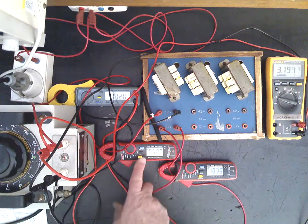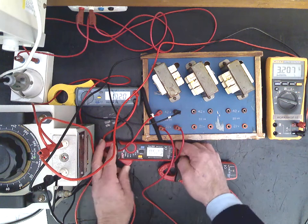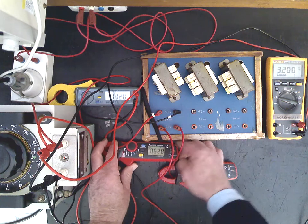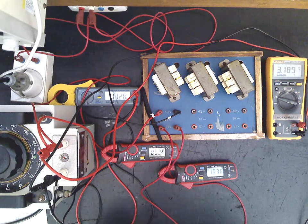The current in the primary is 0.5 of an amp. You can see that. It's a bit reflective, but there's the 0.5, so it's roughly a 2 to 1 transformation ratio.